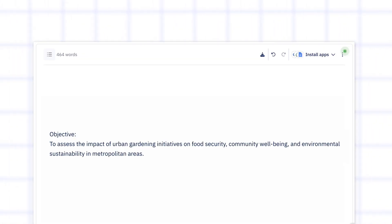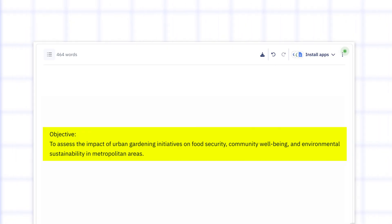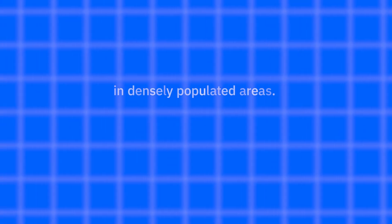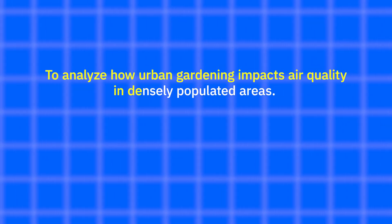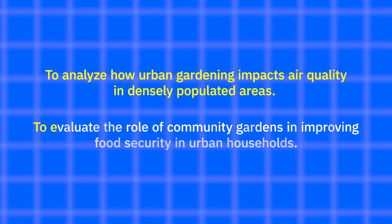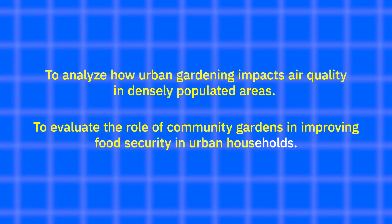Once you've reviewed the literature and found the research gap, the next step is to clearly specify your objective. This part answers the question: what exactly do you want to find through your research? Your objective should be clear and focused. For example, if your topic is urban gardening and city sustainability, your objectives could be: to analyze how urban gardening impacts air quality in densely populated areas, and to evaluate the role of community gardens in improving food security in urban households. Good objectives are simple, specific and directly linked to your research gap. They help guide the entire study, from your methods to final analysis.